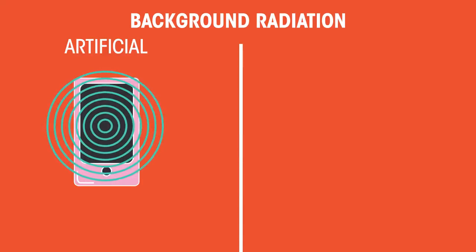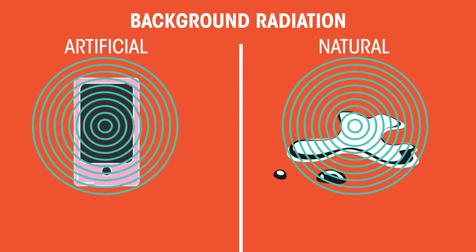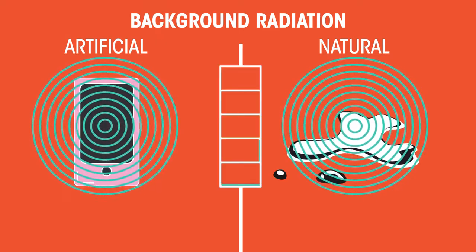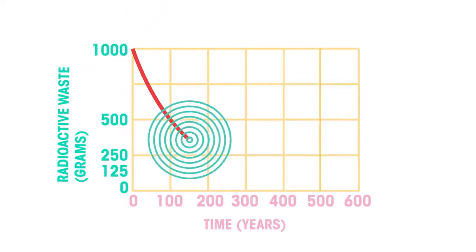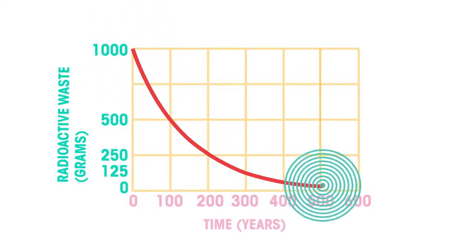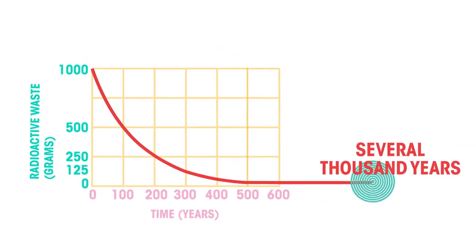Background radiation comes from artificial and natural sources around us that we experience daily. It is low in magnitude, so it isn't harmful. However, for some radioactive wastes to reach this low background level, it may take several thousand years.